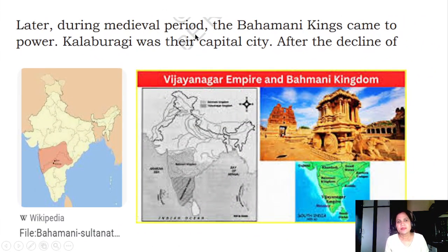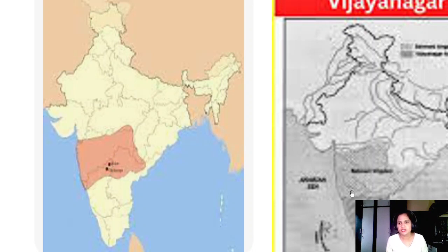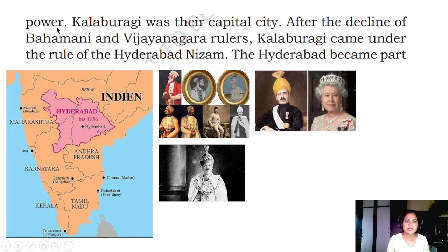Later, during the medieval period, the Bahamani kings came to power. Kalburgi was their capital city. The Bahamani sultans ruled over a large empire. North Karnataka was ruled by the Bahamani Sultanate. After the decline of the Bahamani and Vijayanagara rulers, Kalburgi came under the rule of the Hyderabad Nizams.